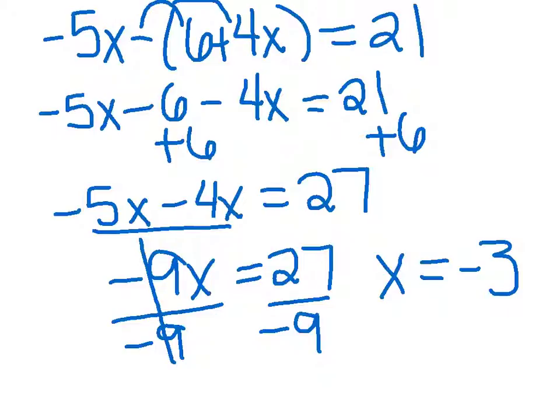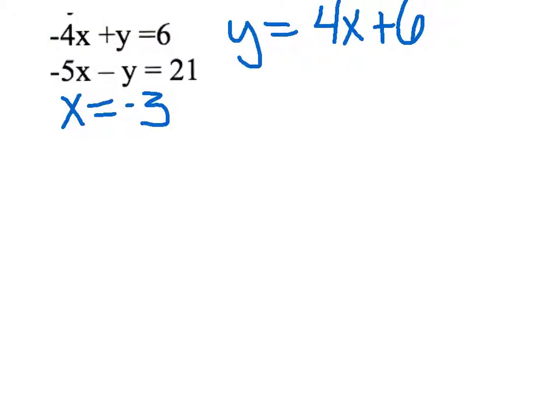Now that we solved x equals negative 3, let's go back and look at our original problems. When looking at our original equations remember we solved the first equation for y. This does not change the equation. They both are still the same equation. We plugged our first equation then into our second equation. When we did that we found x to be negative 3.